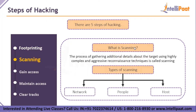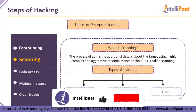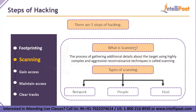Now let's move on to our second step: scanning. Hackers are now seeking any information that can help them penetrate the target, such as computer names, IP addresses, and user accounts. The hacker moves to this next phase and begins to test the network for avenues of attack. There are three types of scanning: port scanning, which involves scanning for open ports, live systems, and services running on the host; vulnerability scanning, which checks the target for weaknesses that can be exploited using automated tools; and network mapping, which involves finding the network topology, routers, firewall servers, and host information, and drawing a network diagram that may serve as a valuable piece of information throughout the hacking process.